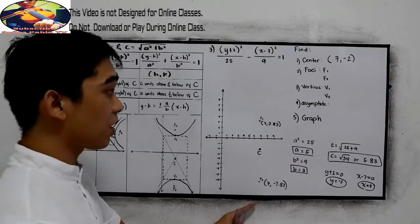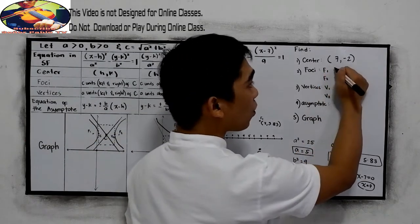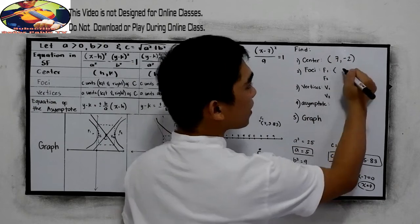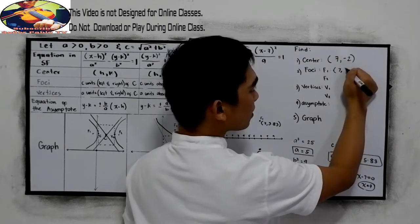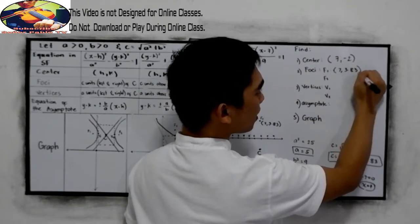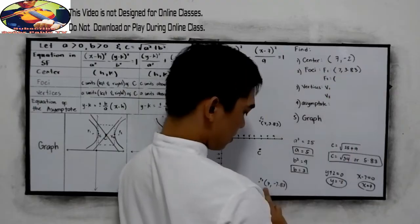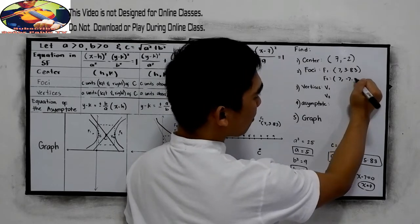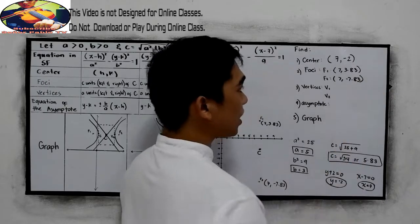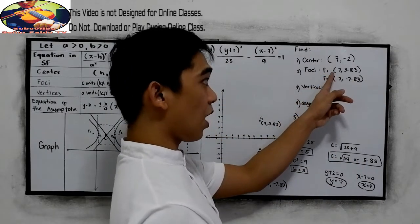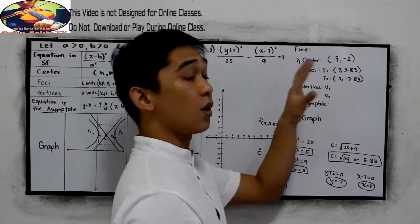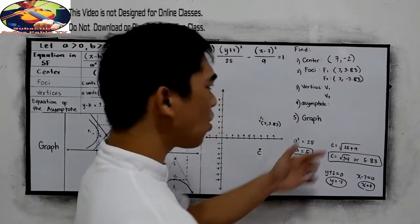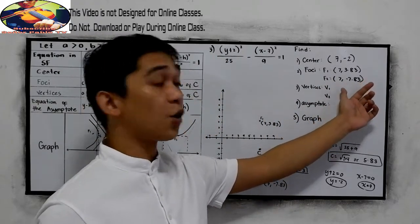That will be our f sub 1 and f sub 2. So we can now write in our answer, 7, 3.83 and 7, negative 7.83. Actually, it can be interchanged. This would be our f sub 2 or f sub 1. It's okay. As long as your coordinates are correct.